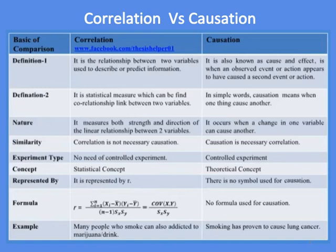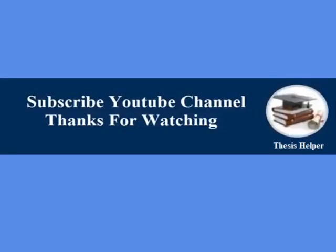An example of correlation is that many people who smoke are also addicted to marijuana or drink, while an example of causation is that smoking has proven to cause lung cancer. Please subscribe to the YouTube channel Thesis Helper. Thanks for watching.